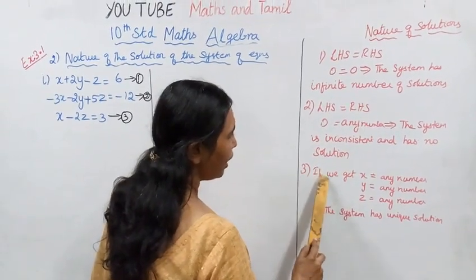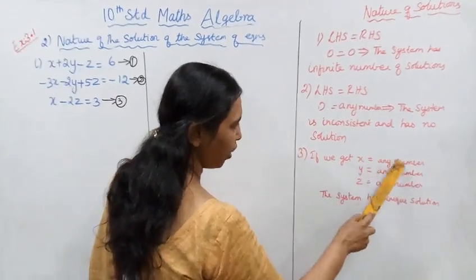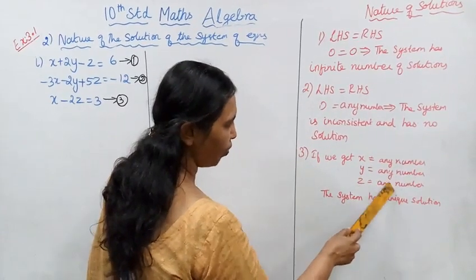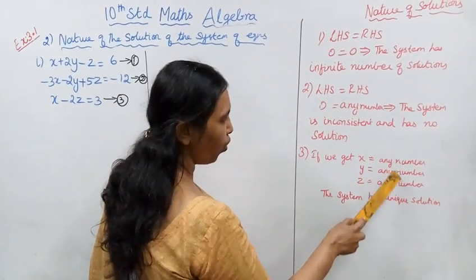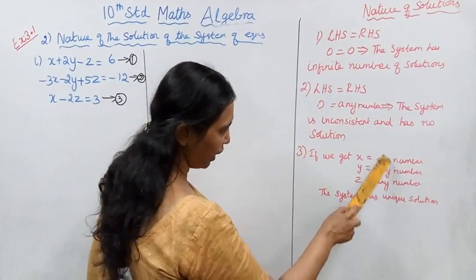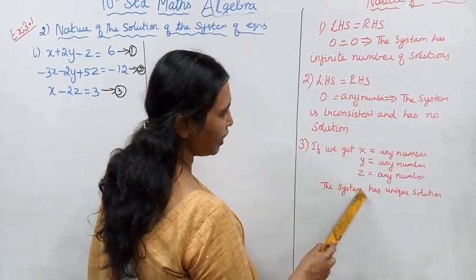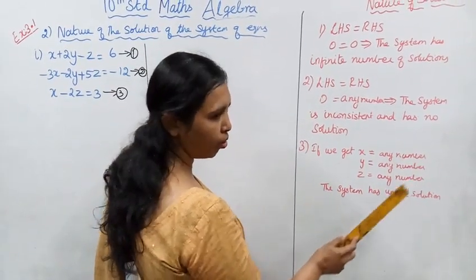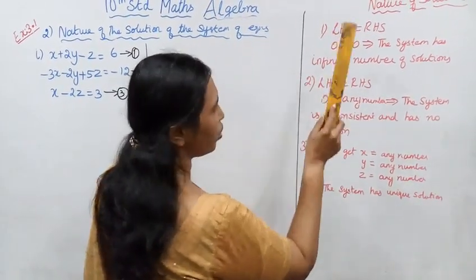Third case: if we get specific values for x, y, z — for example 2, 3, 4 or minus 1, 2 — that means the system has a unique solution. Now let us review the nature of solutions.